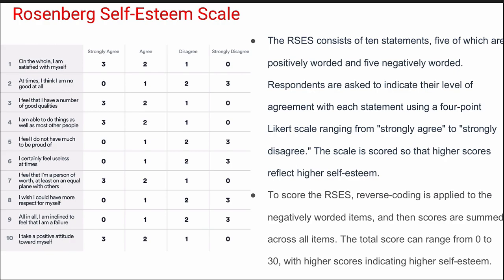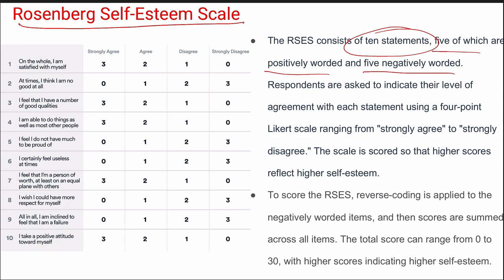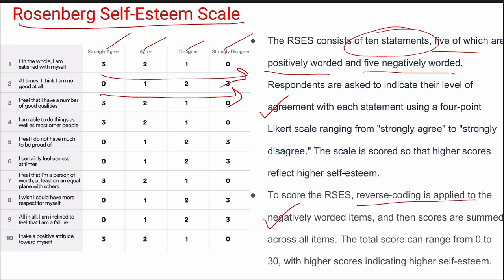Next is the Rosenberg Self-Esteem Scale. It consists of 10 statements: 5 positively worded and 5 negatively worded. Respondents rate on a Likert scale of strongly agree, agree, disagree, and strongly disagree. Reverse coding is applied to negatively worded items. Scores range between 0 to 30, where 30 indicates the highest self-esteem.